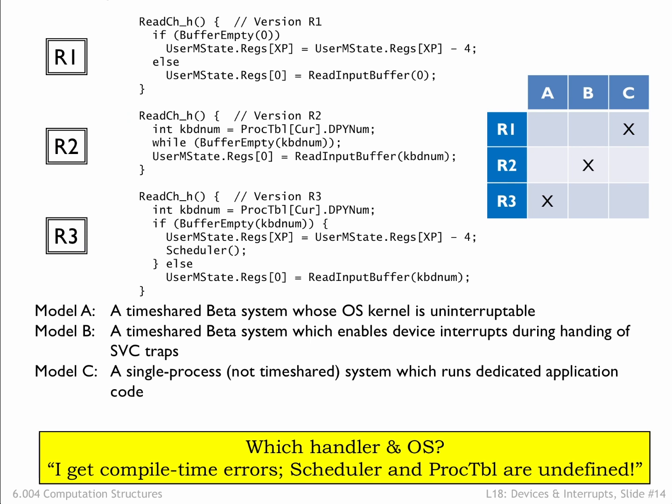The problem goes on to say that a fumble-fingered summer intern has jumbled up the disk containing the handlers and sent an unknown handler version to each user running one of the three model systems. To atone for the mistake, he's been assigned the task of reading various user messages sent after the user has tried the new handler disk on their particular system. Based on the message, he's been asked to identify which handler disk and system the user is using.